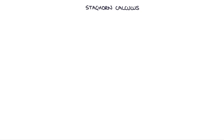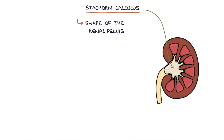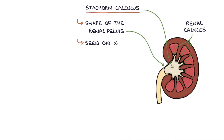A staghorn calculus is where the stone forms into the shape of the renal pelvis, giving it a similar appearance to the antlers on a deer stag. The body of the staghorn calculus sits in the renal pelvis with the horns extending into the renal calyces. A staghorn calculus may be seen on plain x-ray films.